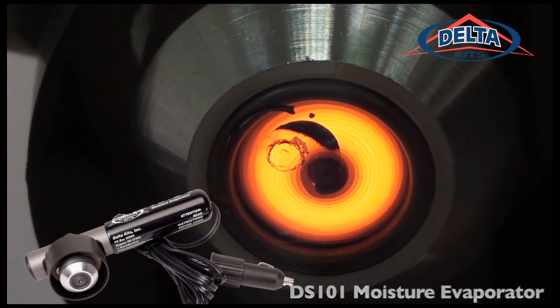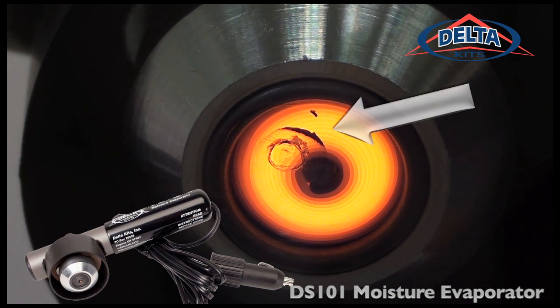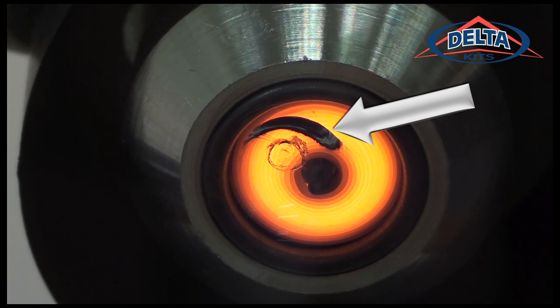If water is present, as in this case, Delta Kits recommends removing it with a moisture evaporator. Notice the water beginning to boil and move towards the center of the break.